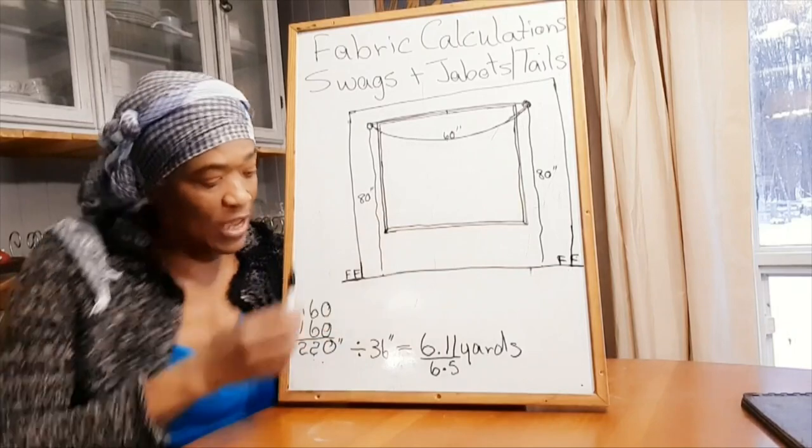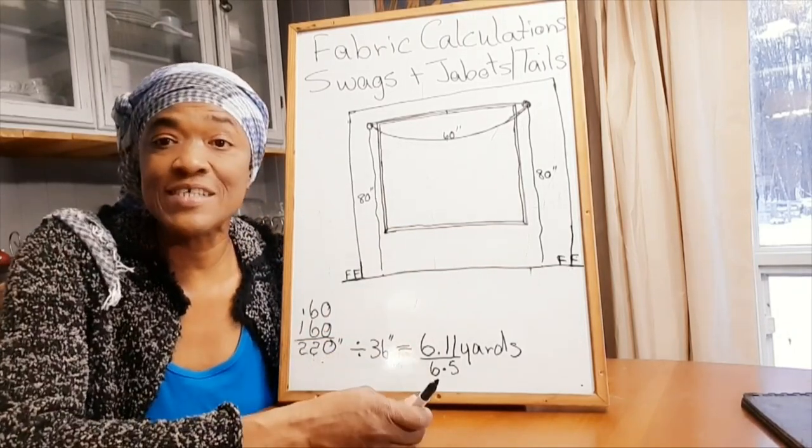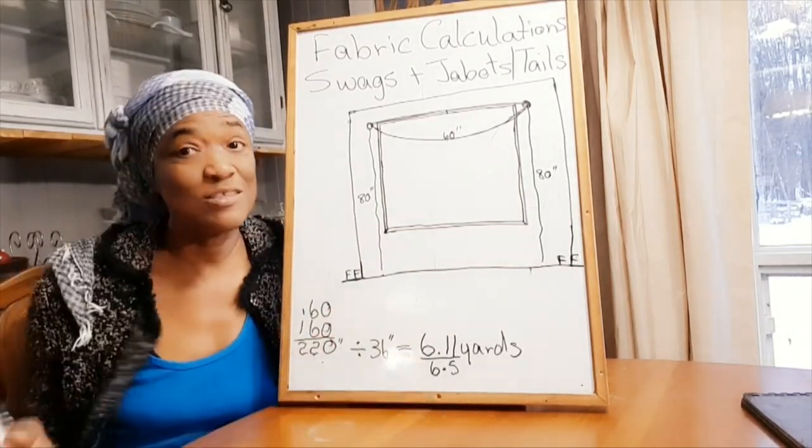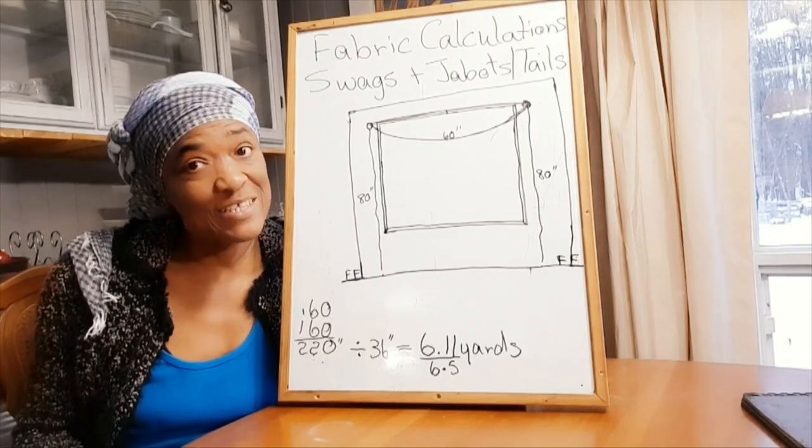And then add up your measurements like I have done here, divide by 36, and you get your required number of yards of fabric to make your swag and your jabot.